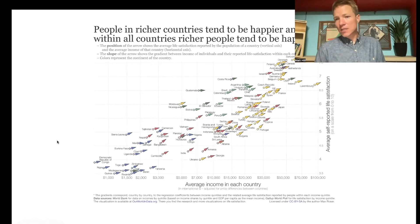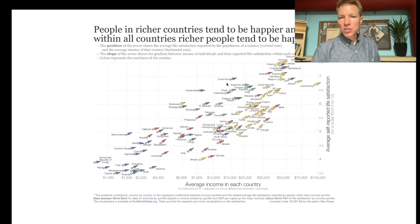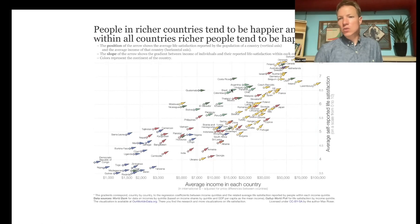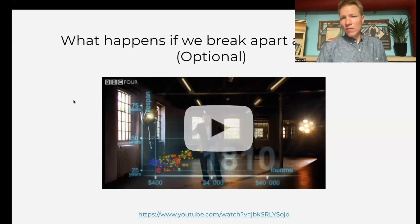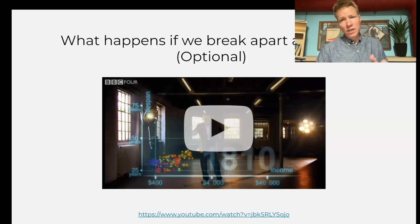And happiness — this is actually life satisfaction. As a country gets richer, the average level of life satisfaction goes up. And these little arrows show that within a country, as people are richer, they are happier or more satisfied with their life. The question is something like: how satisfied are you with your life in this given moment, on a scale of 1 to 10? We also have a really fun video from Hans Rosling and the Our World in Data people, if you have time for it. Highly recommend it.